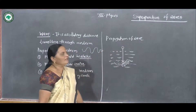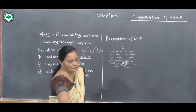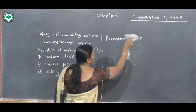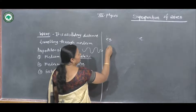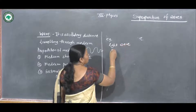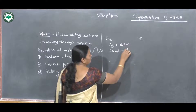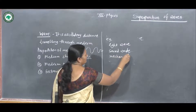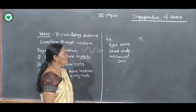Hence we can say that the wave is an oscillatory disturbance travelling through medium. There are different types of waves — for example, light waves, sound waves, mechanical waves, etc. These are examples of waves.